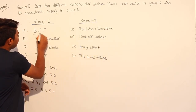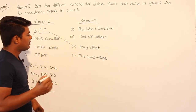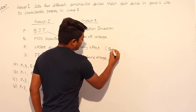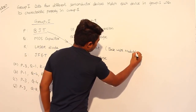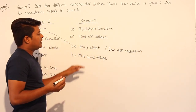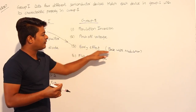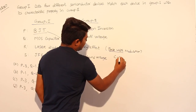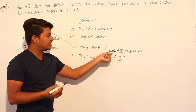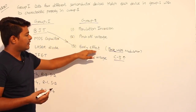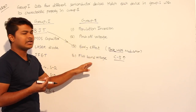Coming to the first one, BJT is related to early effect. This early effect is also known as base width modulation. Whenever you increase the collector-to-base voltage, it results in varying of the base width. Whenever collector-to-base voltage increases, the base width also changes. So BJT is related to early effect, and the term 'base' is used only for early effect — no other phenomena is related to base.